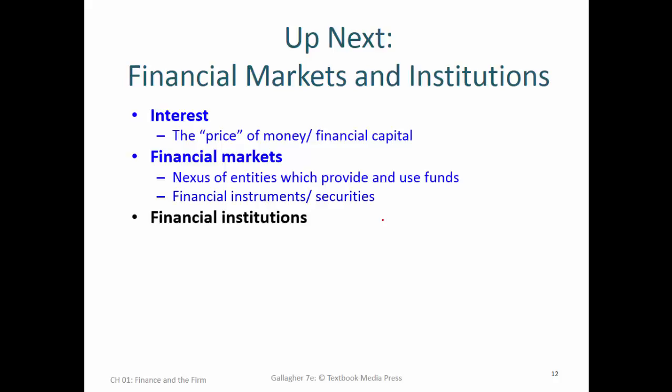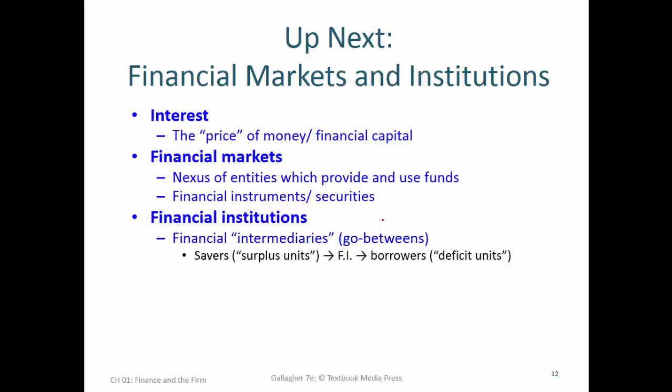We'll talk about financial instruments — securities — where debt is just a structured form of borrowing and lending, and stocks are structured vehicles for owning proportionate claims in a business. We'll also cover financial institutions — intermediaries — the go-betweens between people who have money and people who need money. The textbook uses the terms surplus units — people with extra money, savers — and deficit units — people who need money, borrowers. The financial intermediary is the go-between that collects money from surplus units and channels it to deficit units while assessing risk.